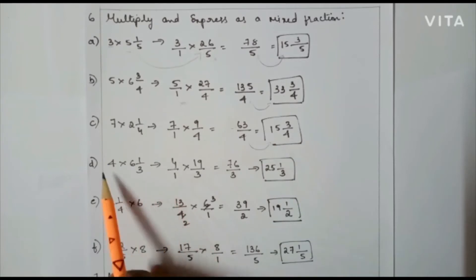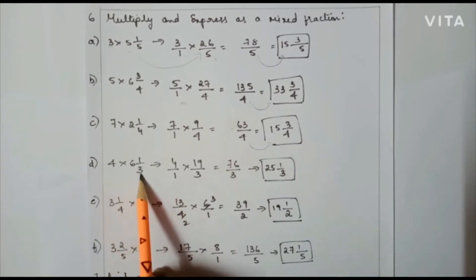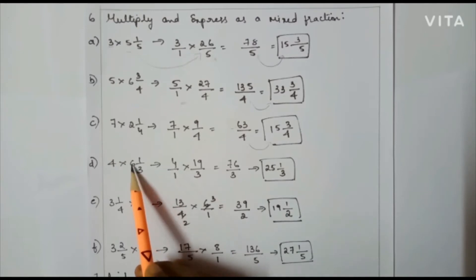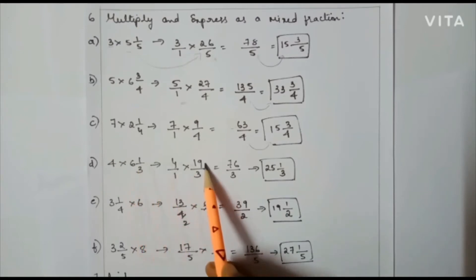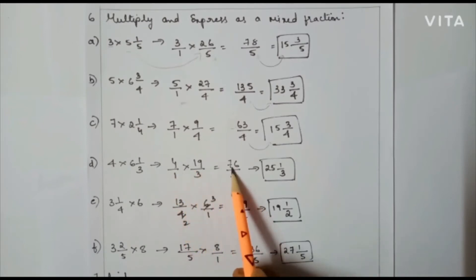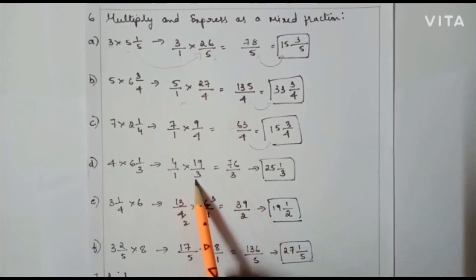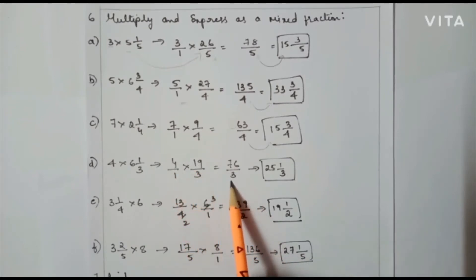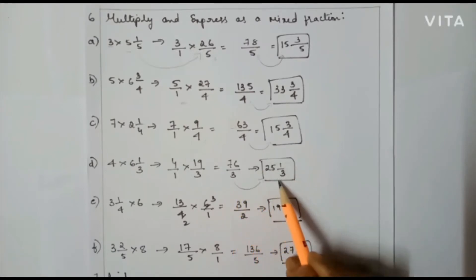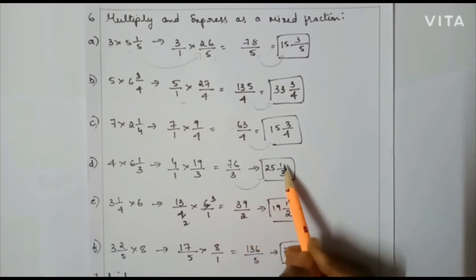Next one: 4 × 6(1/3). That is 4/1 × (3×6=18, plus 1 = 19)/3, so 19/3. Here also I can't cancel. So 4 × 19 = 76, and 1 × 3 = 3. This is an improper fraction. Converting to a mixed fraction gives 25 and 1/3.